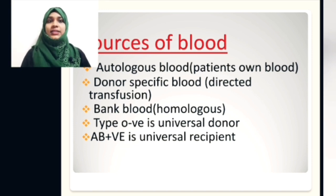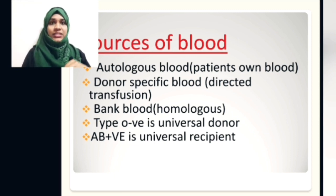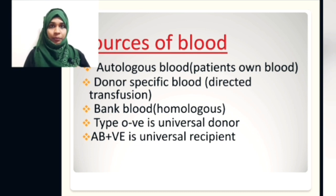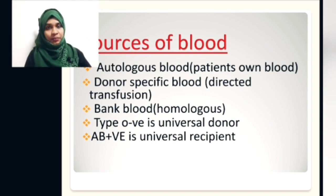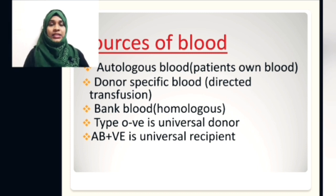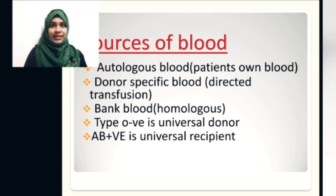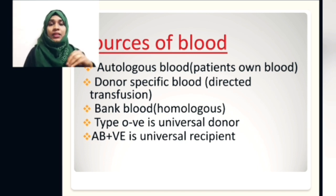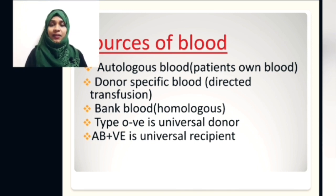Sources of blood include autologous, directed transfusion, and homologous. In autologous blood transfusion, the patient knows they are going to have elective surgery and needs a particular amount of blood. So the patient himself donates blood prior to surgery — it should be three days before the surgery — and he can request that his own blood be transfused. This reduces hemolytic reactions. The patient should have hemoglobin more than 11 gram per deciliter and be healthy enough to donate.